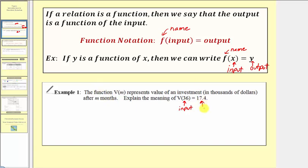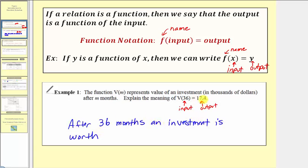The output is 17.4, which is v of m — the value of an investment in thousands of dollars. So v of 36 equals 17.4 tells us that after 36 months, an investment is worth 17.4 thousand dollars. To convert to dollars, we multiply by 1,000, giving us $17,400. So this notation tells us after 36 months, the investment is worth $17,400.